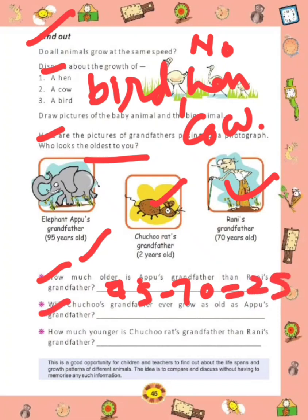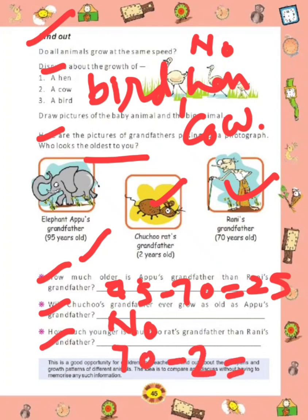Next: will Chuchu's grandfather ever grow as old as Apu's grandfather? No, because animals' growth is not the same. Next: how much younger is Chuchu's rat grandfather than Rani's grandfather? Now calculate the difference. Rani's grandfather is 70 and Chuchu's grandfather is 2, so the difference is 68. Students, you have to complete this page in your notebook and book also. This is your complete page 45.